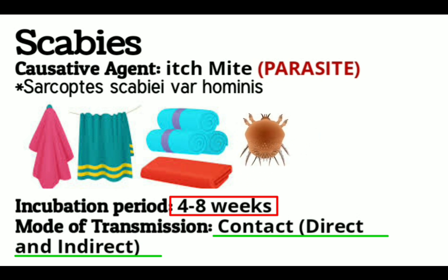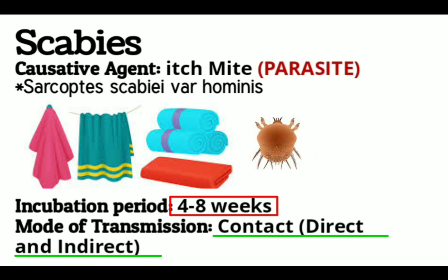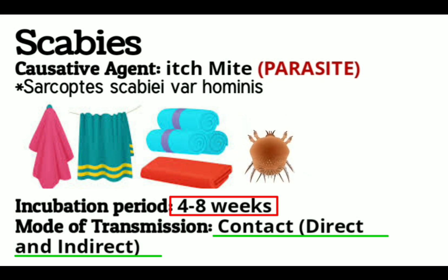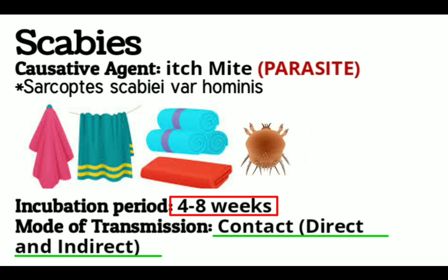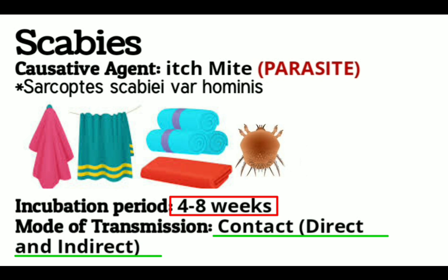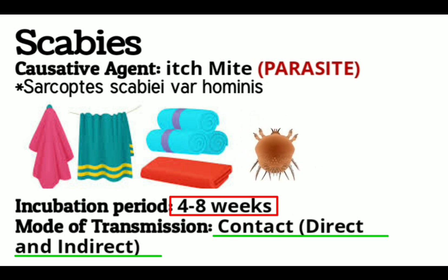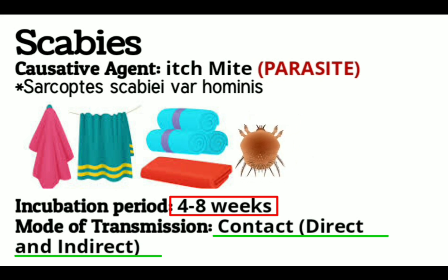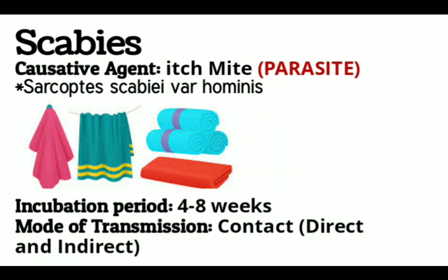Scabies is a contact transmission disease — either direct or indirect contact. Direct contact includes holding hands, body-to-body contact, and sexual intercourse. Indirect contact includes fomites such as furniture, sharing bed linens, towels, and borrowing clothing. These are the ways the human itch mite that causes scabies is transmitted.